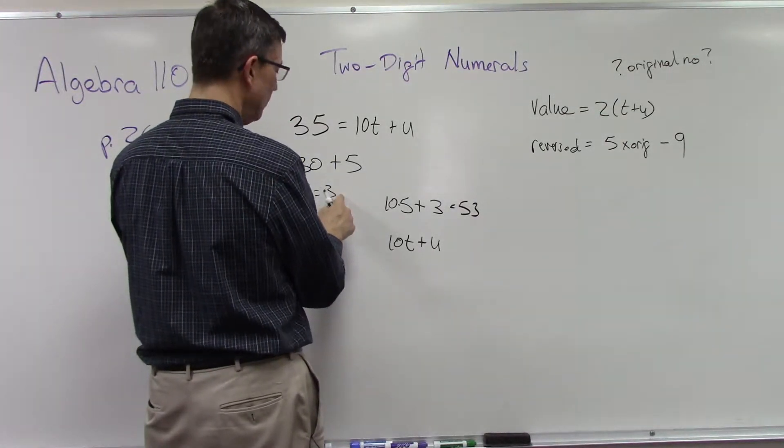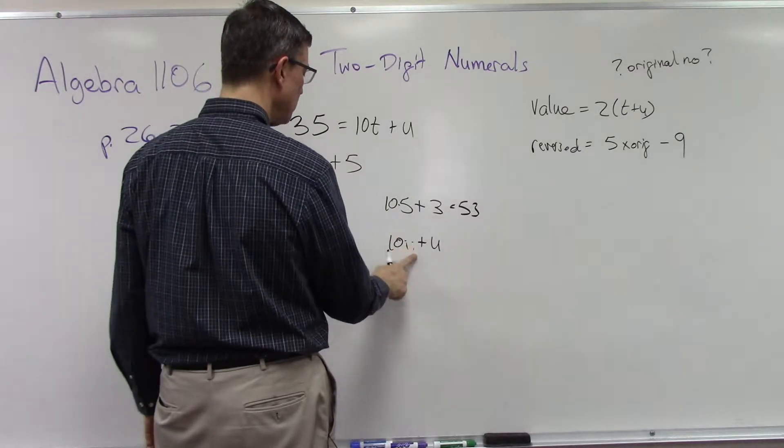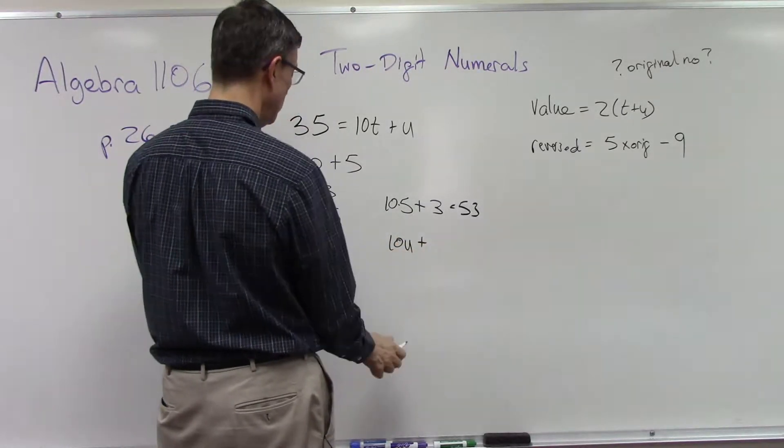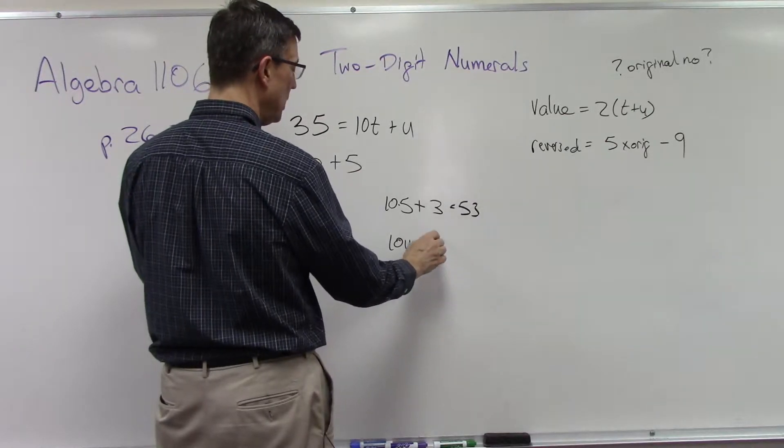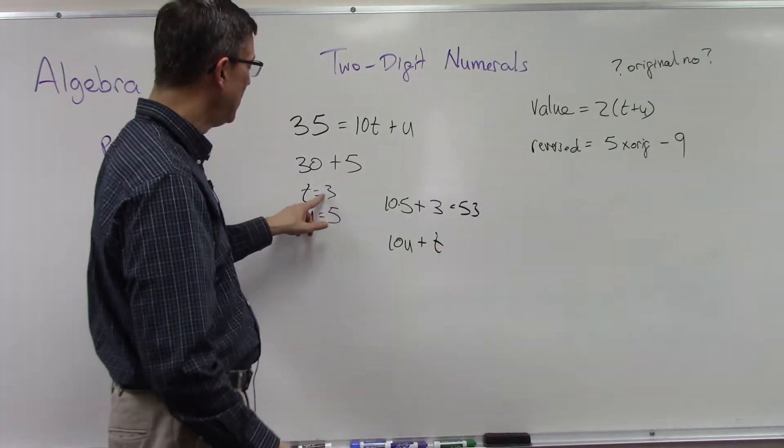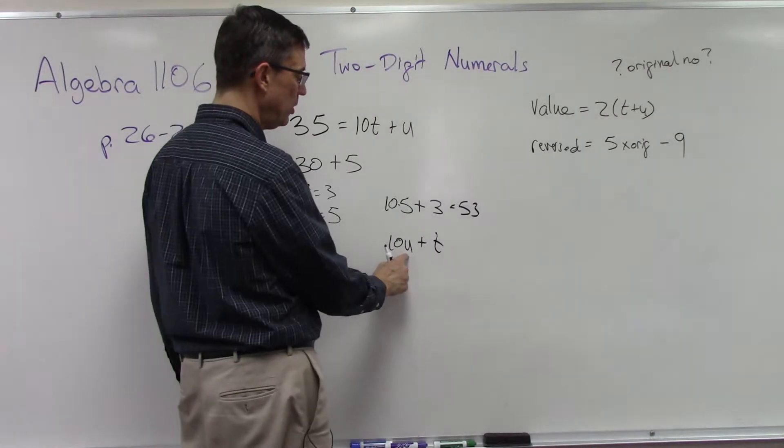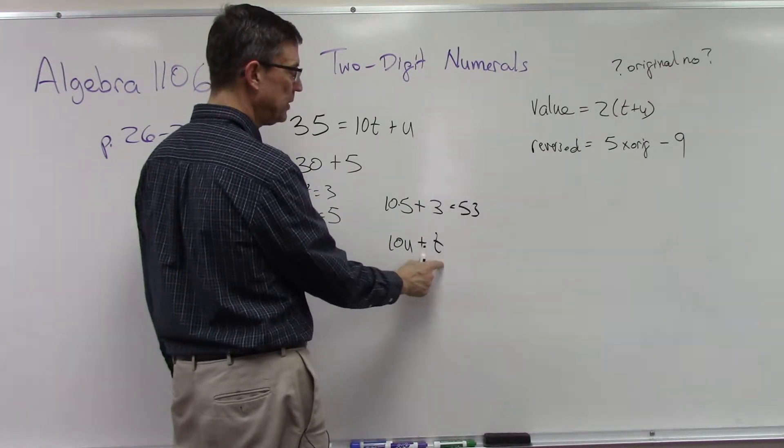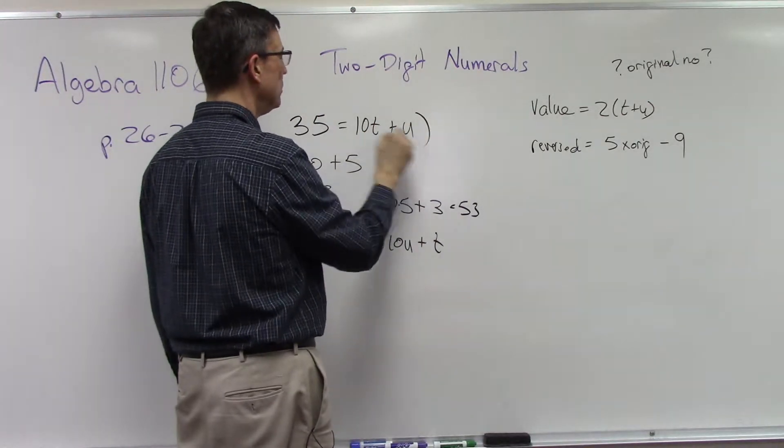It's actually—I'm going to change this and make this 10 times the u, the original units digit, plus the original tens digit. So when it's reversed, it's 10 times u plus t, the original.